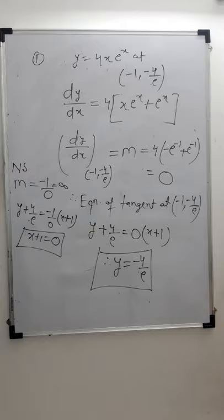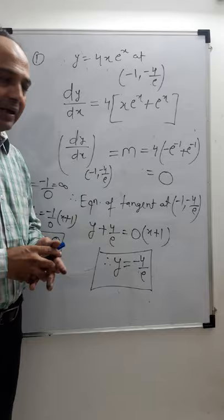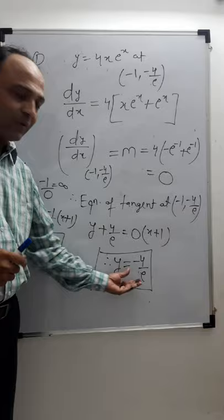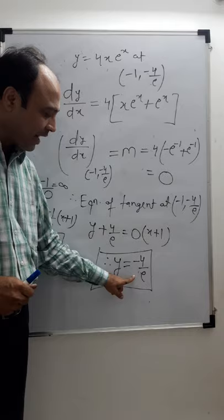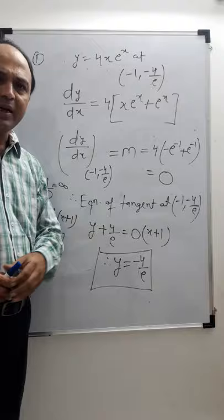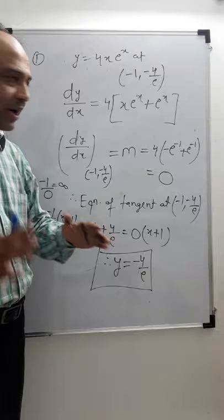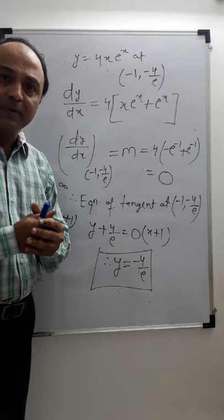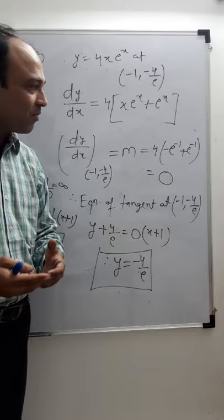NDA gives simple curves — not difficult ones — because they just want to know if you know the process: how to get the slope of the tangent via calculus. That is what NDA expects. This is why they give such questions.